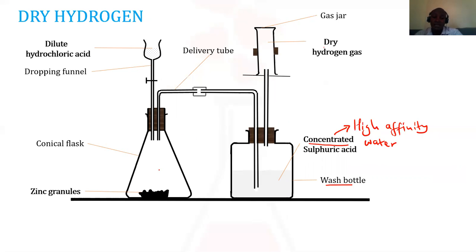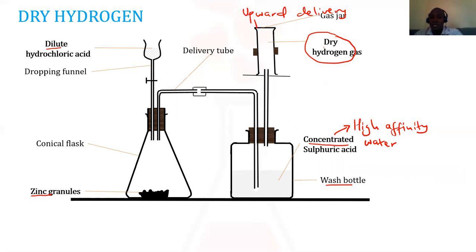To remove all the water molecules present in the gas produced from zinc granules and dilute hydrochloric acid, we collect our dry hydrogen gas by upward delivery, because hydrogen is very light and lighter than air. This is the adaptation we use: concentrated sulfuric acid, having a high affinity for water, removes the water content from our gas.